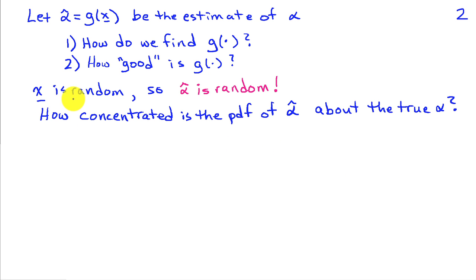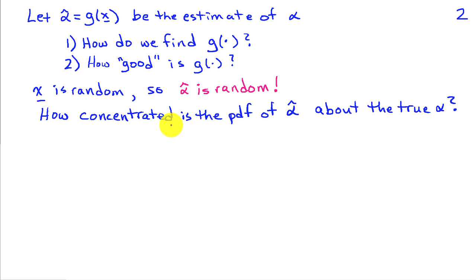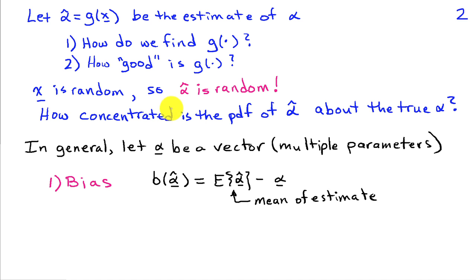Since X, our data, is random under a probabilistic model, and G is a function of random data, our estimate alpha hat is also random — described by a probability density function. When we ask about quality, we want to know how concentrated the PDF of alpha hat is around the true alpha, i.e., how close we'll be to the true value.